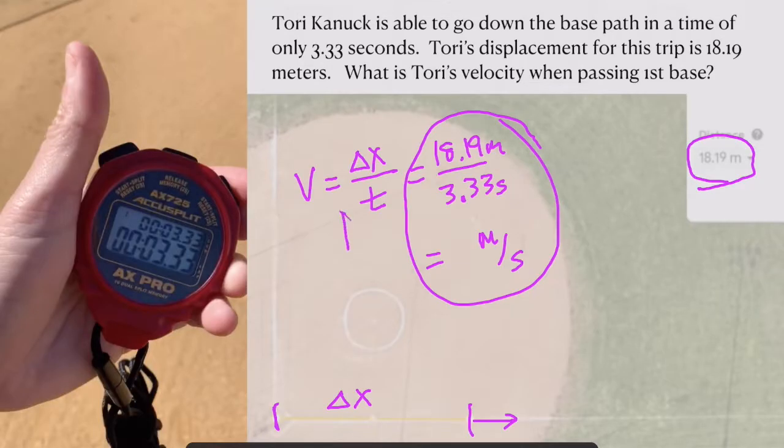What you find with this formula is what's known as the average velocity. If you're taking the total displacement divided by the total time, you get average velocity.